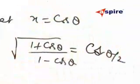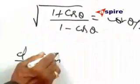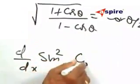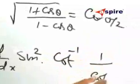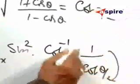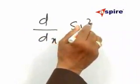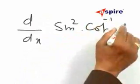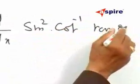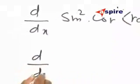So this will be equal to d by dx of sin squared cot inverse of 1 by cot theta by 2, and this is equal to d by dx of sin squared cot inverse of cot theta by 2.